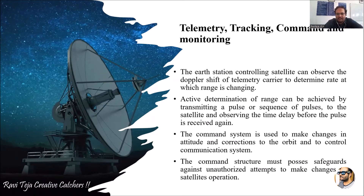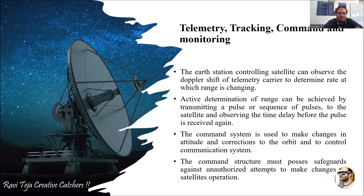An active determination of range can be achieved by transmitting a pulse or sequence of pulses to the satellite and observing the time delay before the pulse is received again. To check whether the satellite is transmitting or receiving signals on time, sample pulses can be sent to the satellite, an acknowledgement is received, and from the time gap of that acknowledgement we can estimate the transmission, reception, and how active that particular satellite is.